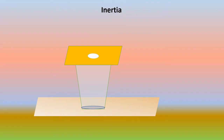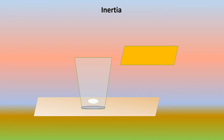Now children, let us perform an experiment. Place a coin on top of the cardboard kept over a glass. Flick the cardboard suddenly. When you flick the cardboard, the coin which was at rest before the cardboard was pulled falls back into the glass. When you pull the cardboard, the coin shows the tendency to remain at rest — it doesn't move along with the cardboard. It falls back into the glass. This tendency is known as inertia of rest.